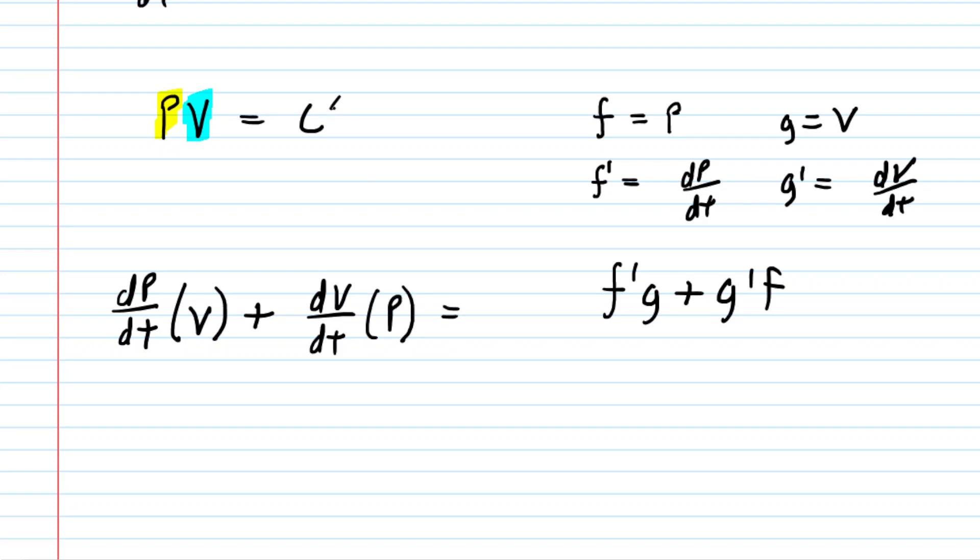Over on the other side, the question noted that c was a constant, and of course a constant isn't changing by definition, so its rate of change with respect to time is simply going to equal 0.